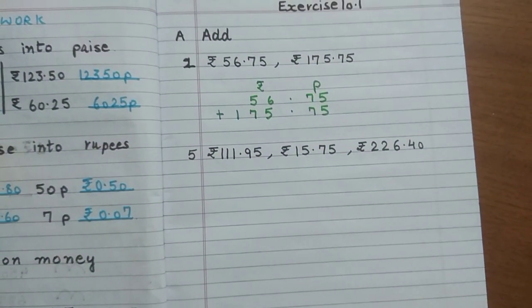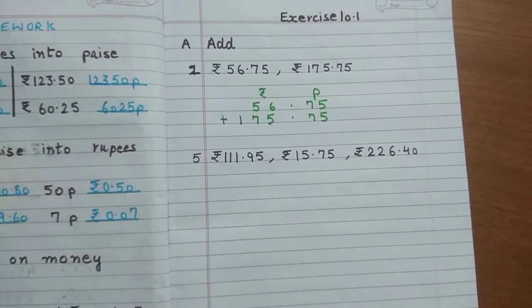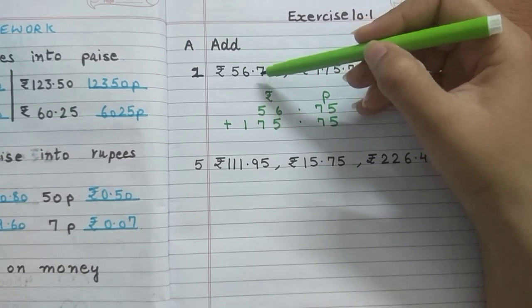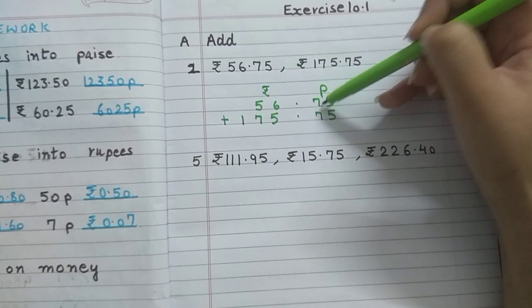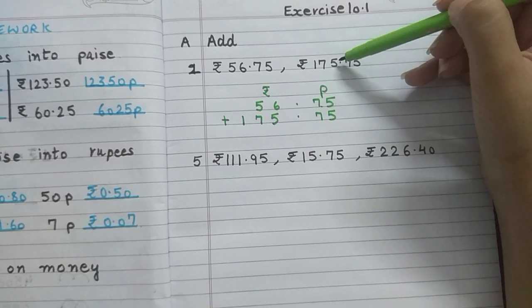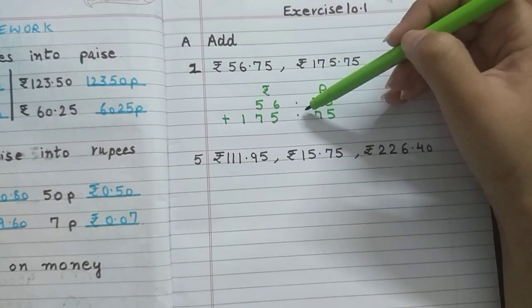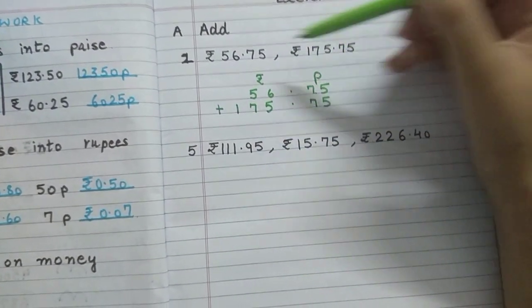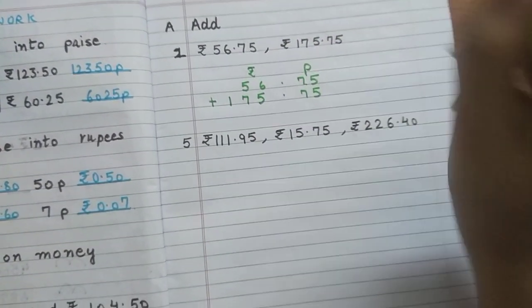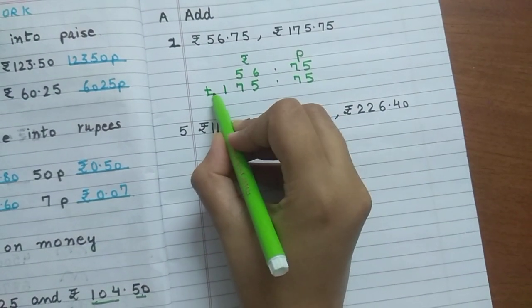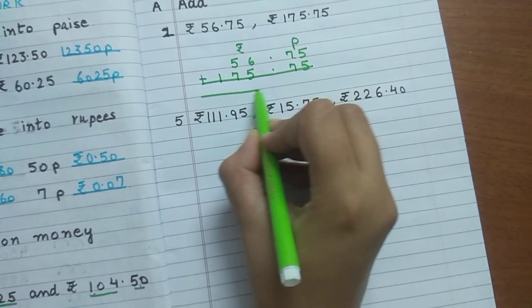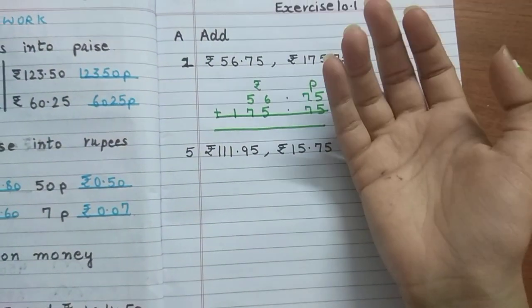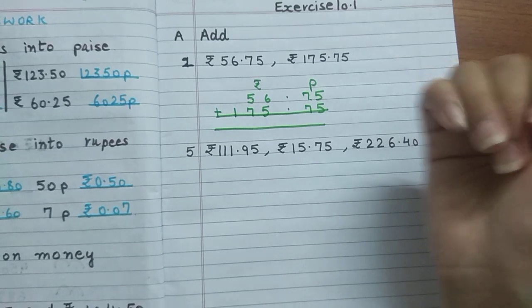Now let's add. 5 plus 5. 5 in the mind, 5 fingers out, count: 6, 7, 8, 9, 10. 5 plus 5 is 10. 1 above, 0 down.